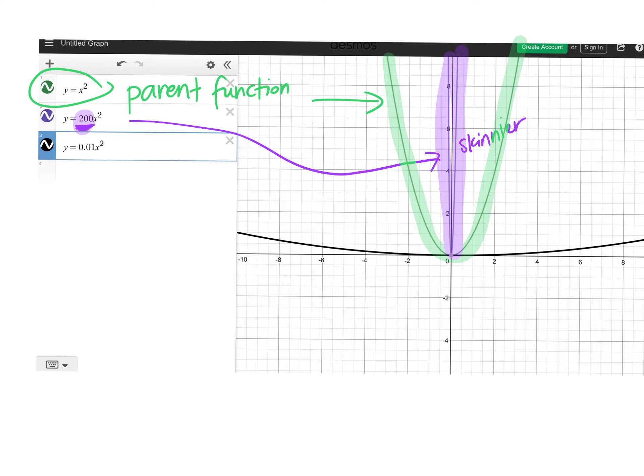If it was a decimal, so any decimal, it could be a fraction, it could be a decimal, it becomes way wider than the parent function, than this one, than the original. This is the parent function. Does that make sense? Try some other equations and see.